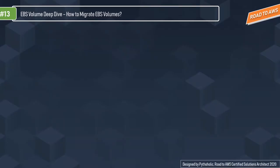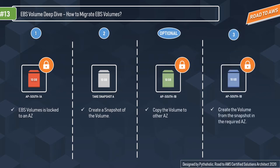This is really important for the exam. EBS volumes are locked to an availability zone. To migrate a volume to another AZ: first, create a snapshot of the volume; optionally copy the snapshot to the desired AZ; then create a volume from that snapshot in the specific AZ of your choice. That's quite simple — create the snapshot, then create a volume from it in the target availability zone.